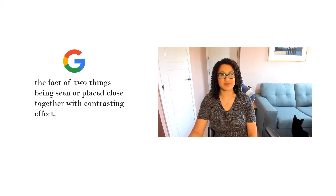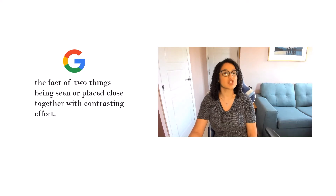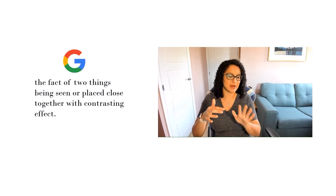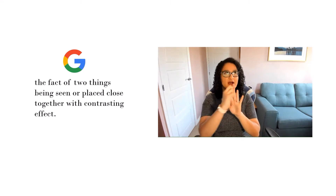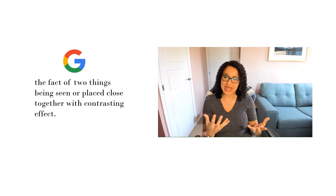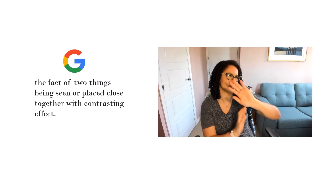The Google definition of juxtaposition is actually pretty spot on. They define it as the fact of two things being seen or placed close together with contrasting effect. So juxtaposition is basically a type of contrast. But we can think of contrast in a similar way to that old saying about how all thumbs are fingers but not all fingers are thumbs. All cases of juxtaposition are contrast, but not all cases of contrast are juxtaposition.